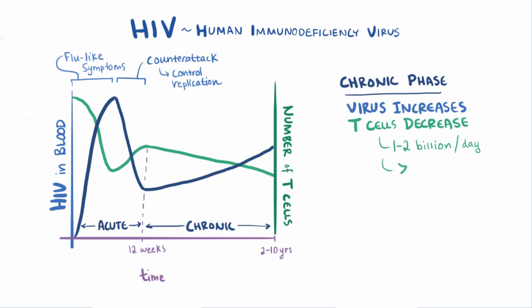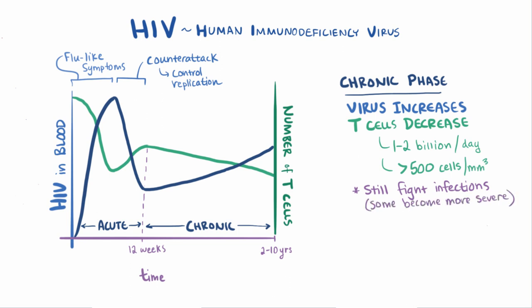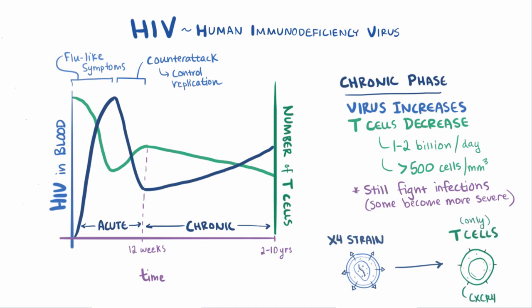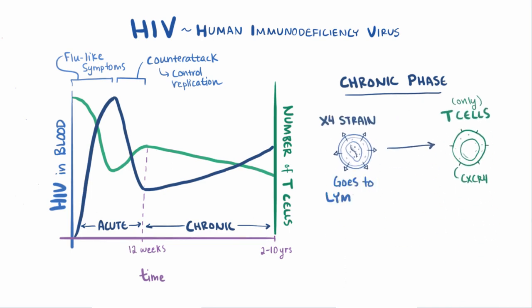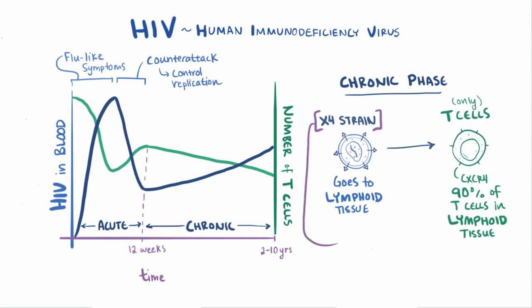During the chronic phase, T cell counts usually remain above 500 cells per cubic millimeter, and patients can still fight off infections fairly well, although some infections like tuberculosis become more common and severe. Some patients develop an X4 strain of HIV during this phase, which targets the CXCR4 coreceptor found essentially only on T cells. These X4 strains lay low in lymphoid tissues and steadily destroy CD4 T cells, since about 90% of T cells are found there. Not all patients develop the X4 strain, so its implications for disease course are not completely clear.